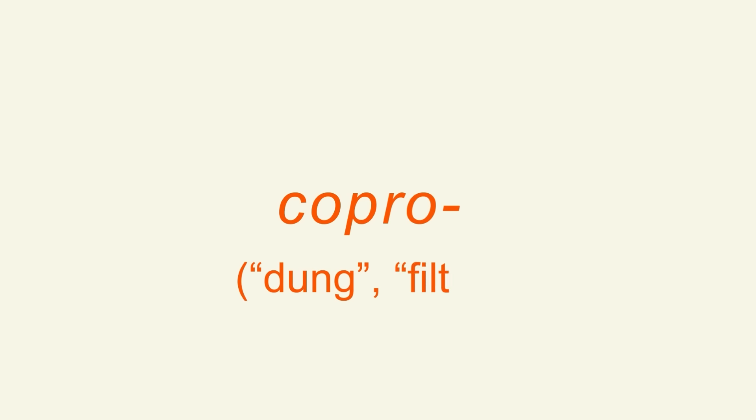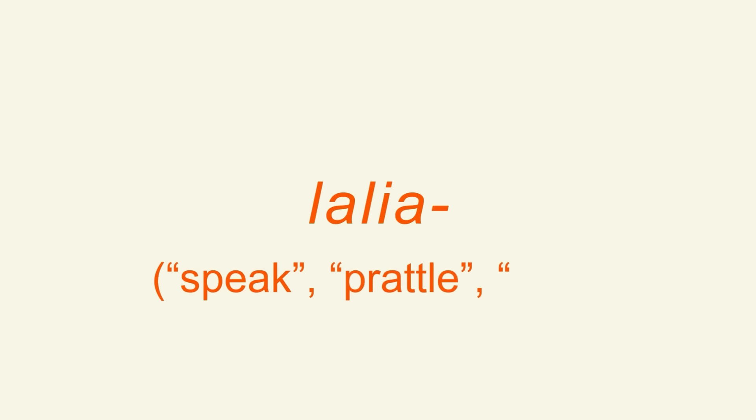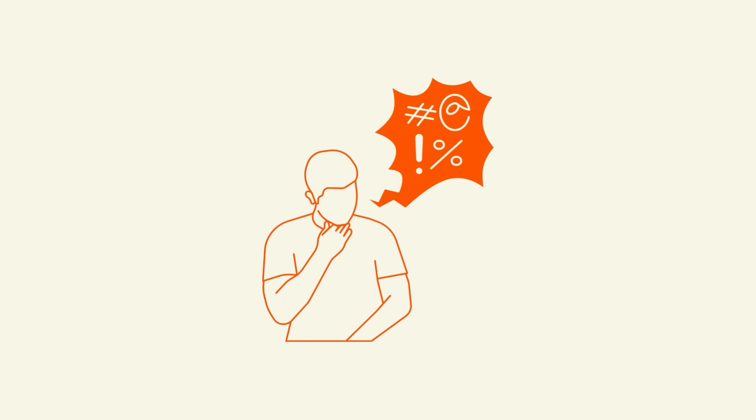Coprolalia — 'copro' meaning dung or filth, and 'lalia' meaning speak, prattle, or talk — is a type of coprophenomenon characterized by involuntary swearing. It is most often associated with Tourette's syndrome, but it actually only occurs in about 10% of people with Tourette's. And many swear words have multiple ways of using them.